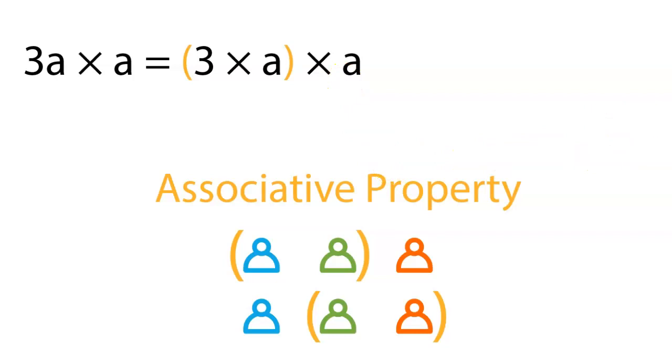So what are we going to do? First we have 3 times a, the 3 and the a are hanging out. Now we're going to boop those over. Now the a and the a are going to hang out. Why is that so important? Because we can simplify a times a. a times a we know equals a squared. Now we have 3 times a squared, and that simplifies even further to 3a squared.